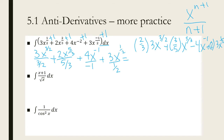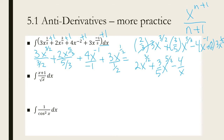Now I am going to simplify one more time because those 3s can cancel, and this will just be 2x to the 3/2. Plus 3/5 x to the 5/3 — that just stays. This one you can change to 4 over x if you would like, or you can leave it as x to the negative 1. Plus 6x to the 1/2 — you can change that to the square root if you want, but you can just leave it as well. And plus C.